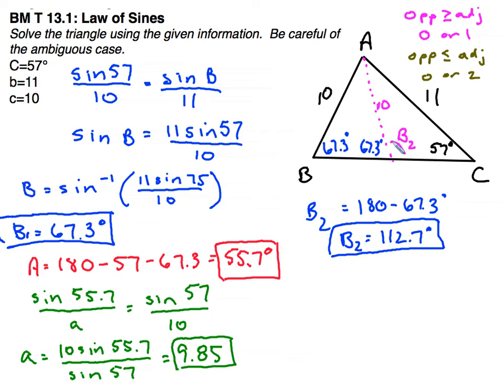Okay, so that's this obtuse angle right here, B2. To find A2, I'm going to use the same process now as I did before. A is going to equal 180 minus the other two angles, 112.7 and 57. So we'll call that A2, it's going to equal 10.3 degrees.